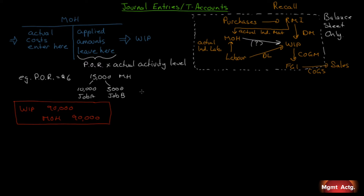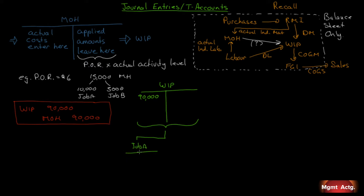Here's our work in process account — $90,000 goes in. That $90,000 gets split up between the jobs. Job A had 10,000 hours at $6, so Job A will get $60,000 of that $90,000. Job B has 5,000 of those 15,000 actual hours, so Job B will get 5,000 times $6 — the predetermined overhead rate — equaling $30,000 of that $90,000. So of that $90,000, $60,000 is in Job A and $30,000 is in Job B.